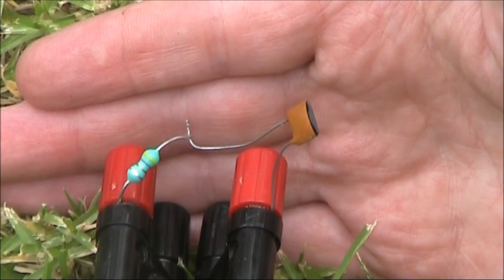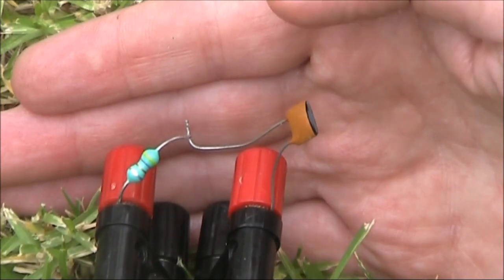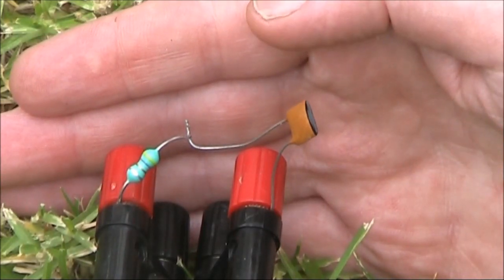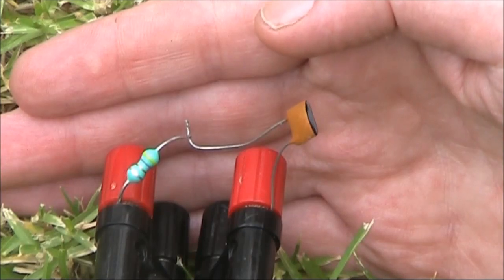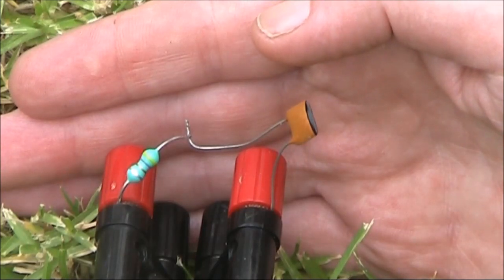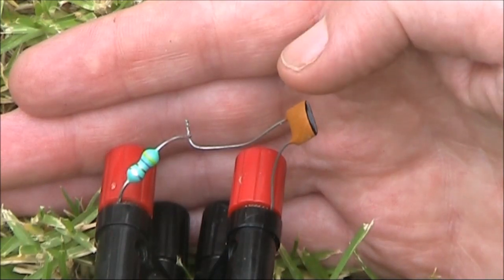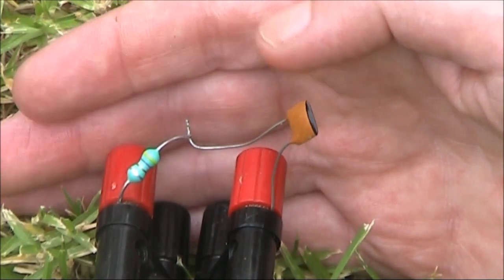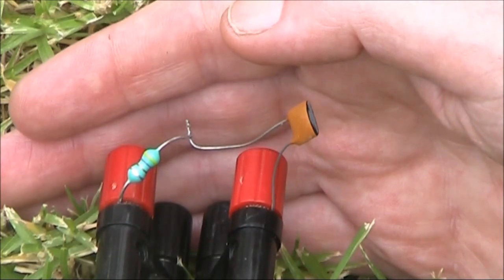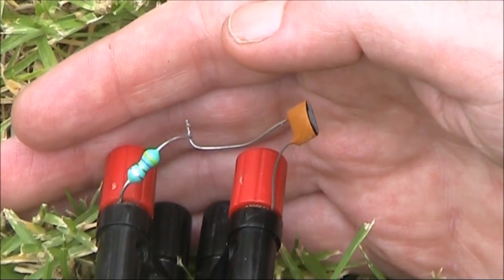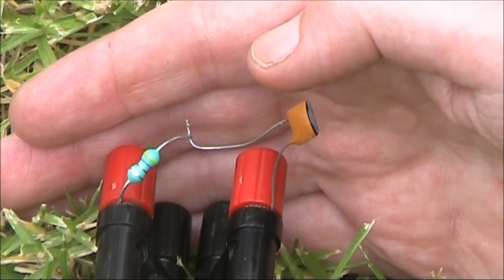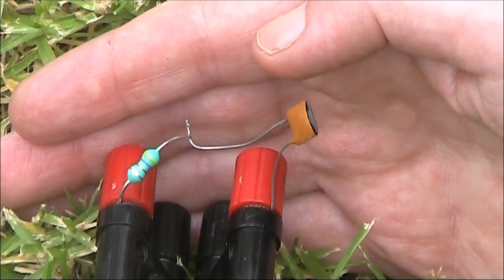In the previous video, I put a crystal across the output and input of the Antrino, and in the SNA mode could see its frequency. Now I'm doing the same with an inductor and capacitor in series. The inductor is an RF choke at 4.7µH, and the capacitor is a disc ceramic at 68pF.